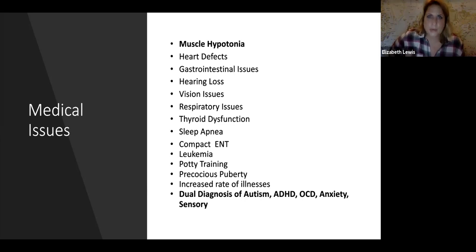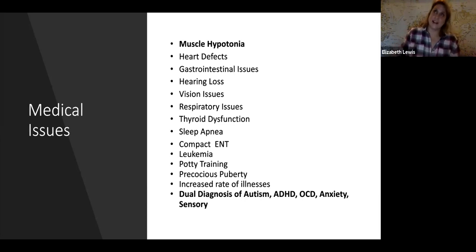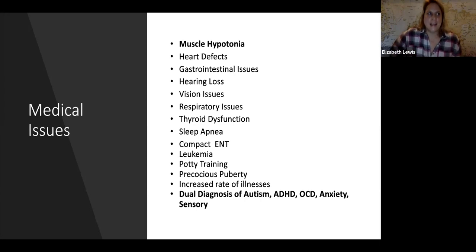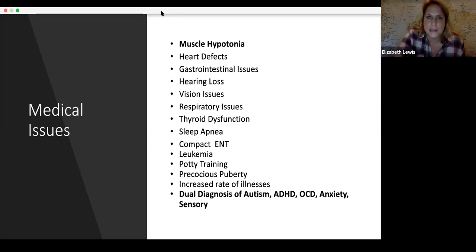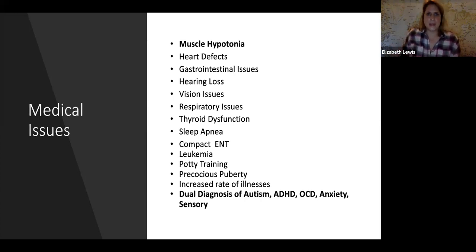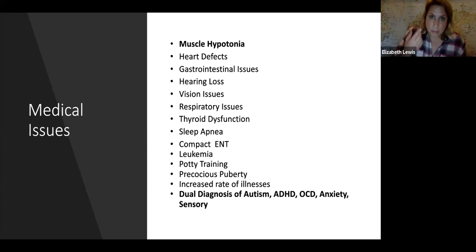It's good to ask family members about a child's sleeping habits and whether sleep apnea plays a role in that child's ability to navigate the whole school day. Our kids are also late bloomers in potty training, and there's also precocious puberty to be aware of. In general, students with Down syndrome have an increased rate of illnesses — they can catch a cold more easily and produce a lot of mucus, which doesn't necessarily mean they have a cold. Additionally, we're learning more about dual diagnosis — about one in every seven to eight kids born with Down syndrome may also have a diagnosis of autism or ADHD.